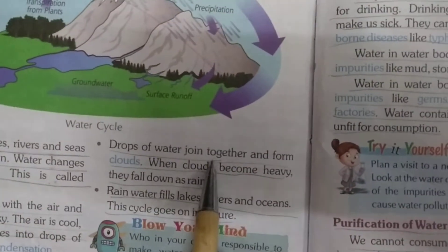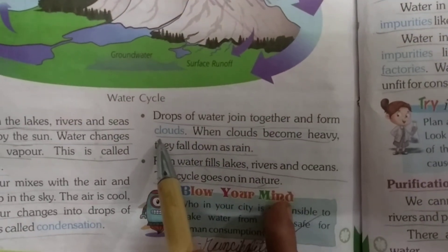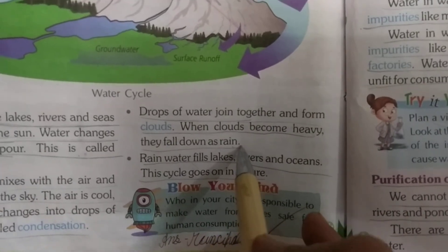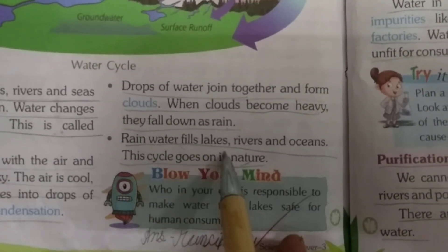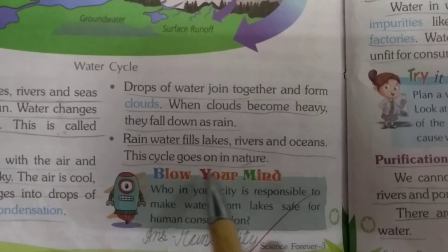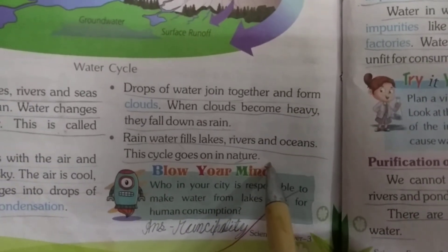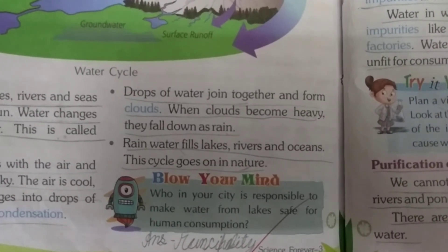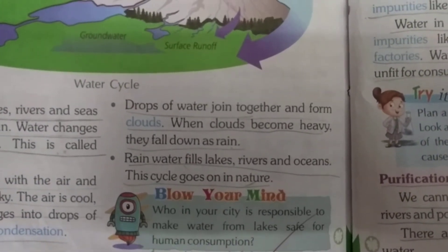Drops of water join together and form clouds. When clouds become heavy, they fall down as rain. Rain water fills lakes, rivers and oceans. This cycle goes on in nature, and we call it the water cycle.